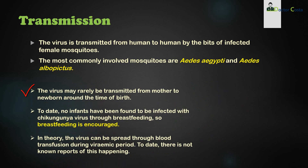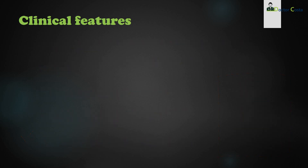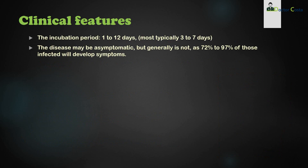The virus may rarely be transmitted from mother to newborn around the time of birth. To date, no infants have been found to be infected with chikungunya virus through breastfeeding, so breastfeeding is encouraged. In theory, the virus can be spread through blood transfusion during the viremic period, which is the first two or three days after the onset of illness. To date, there are no known reports of this happening.